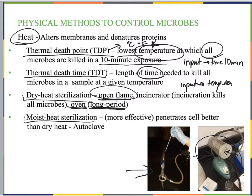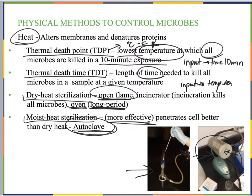Moist heat sterilization is actually more effective than dry heat sterilization. That's why we use moist heat sterilization to make sure our media and glassware are sterile — both in our laboratory and in medical or research facilities. It's more effective because it penetrates the cell better; it's a liquid environment, so the moist heat is going to penetrate better.